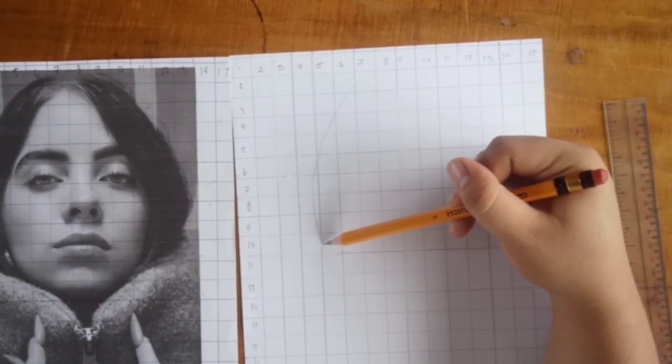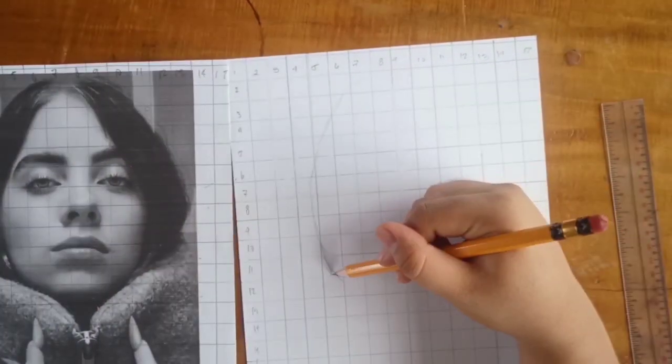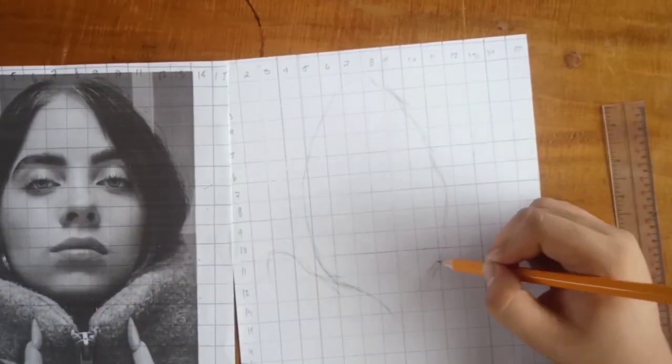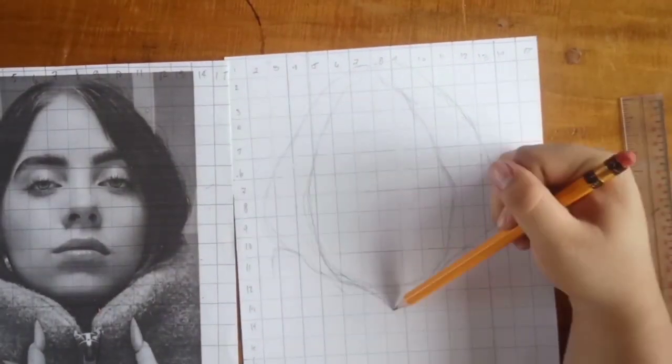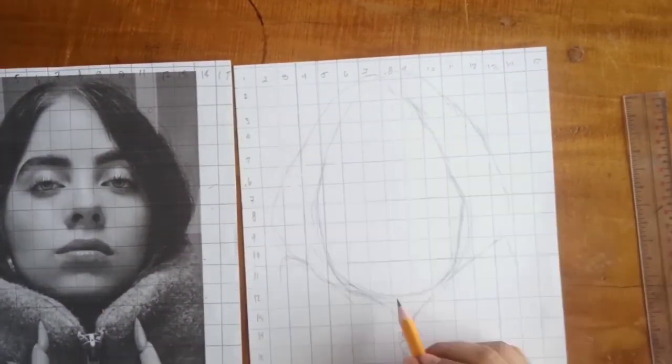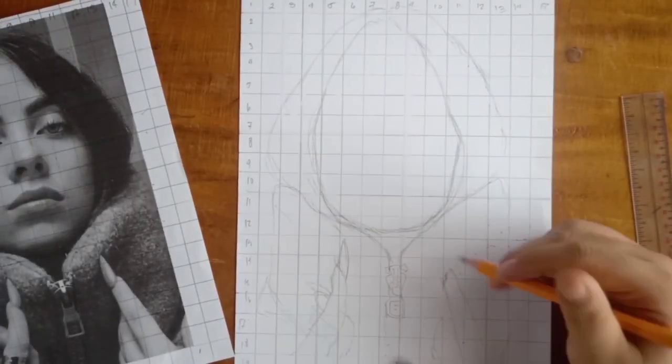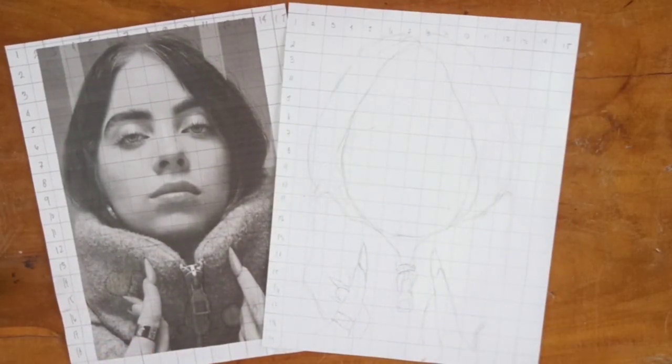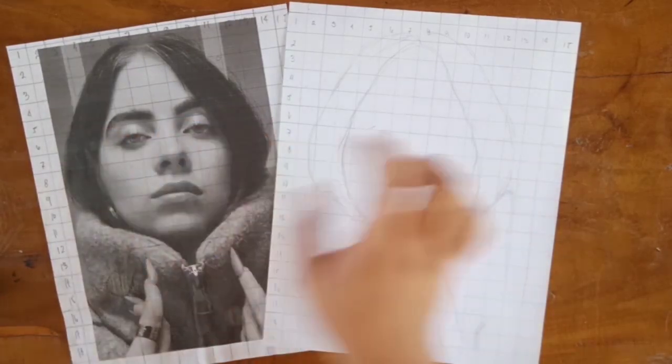As you can see, yung mga numbers ako na nilagay sa gilid, ito yung magsisilbing guide natin. Sa paggamit ng grid, kailangan natin magbilang kung saan tatama yung linya, yung outline, para accurate at magaya natin ng maayos. Tapos ko na ma-outline yung shape lang mukha, saulad ako naman tayo sa loob, and gagawin na natin yung mata, ilong bibig, ganon.